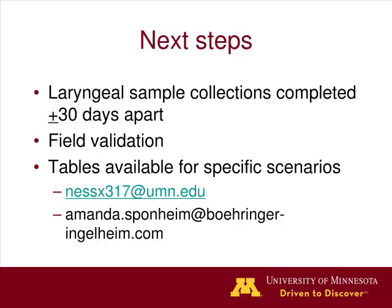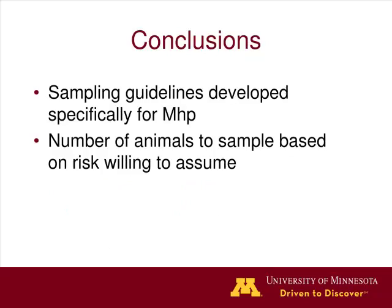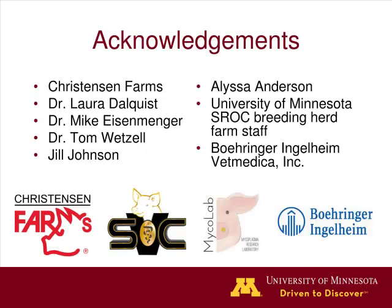Next steps include validating these sampling tables in the field. We have a group of tables compiled so far and are developing specific sampling guidelines for different scenarios and population sizes on a requested basis. In conclusion, these sampling guidelines are developed specifically for Mycoplasma hyopneumoniae, accounting for the diagnostic sensitivity of the entire testing procedure, the slow spread within a herd for determining sampling time points, and the risk the practitioner is willing to assume in terms of detection probability and target prevalence.